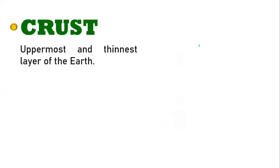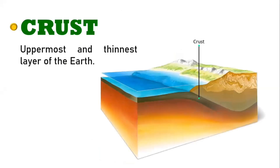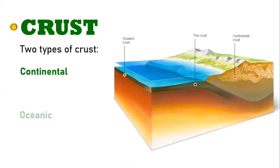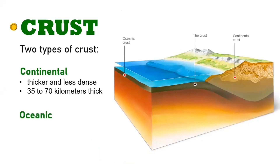The crust is the uppermost layer of the Earth. It is also the thinnest one. There are two types of crust: the continental and the oceanic. The continental crust is thicker and less dense compared to the oceanic crust. It is about 35 to 70 kilometers thick, while the oceanic crust extends about 5 to 10 kilometers on the ocean floor.